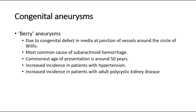There are many other types of aneurysms, such as congenital aneurysm, also called berry aneurysms. This occurs due to a congenital defect in the media at the junction of vessels around the circle of Willis. It is the most common cause of subarachnoid hemorrhage.